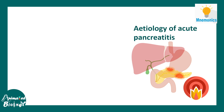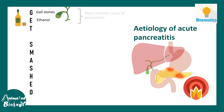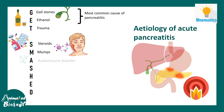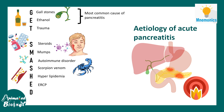The etiology of acute pancreatitis can be remembered by the mnemonic GET SMASHED. G stands for gallstones and E stands for ethanol — these are the two major causes. T stands for trauma, S for steroid abuse, M for mumps virus, A for autoimmune component, S for scorpion venom, H for hyperlipidemia, E for ERCP which is a treatment procedure, and D for drugs that have the potential to lead to pancreatitis.